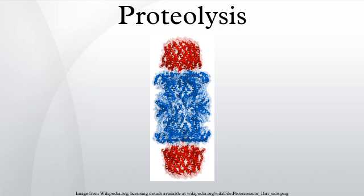Cell cycle regulation: cyclins are a group of proteins that activate kinases involved in cell division. The degradation of cyclins is the key step that governs the exit from mitosis and progress into the next cell cycle. Cyclins accumulate in the course of the cell cycle, then abruptly disappear just before the anaphase of mitosis. The cyclins are removed via a ubiquitin-mediated proteolytic pathway.